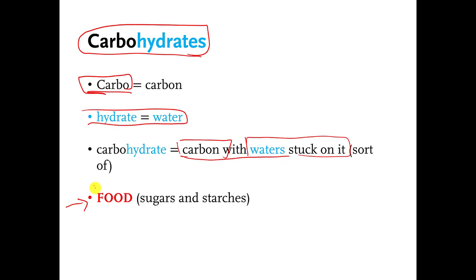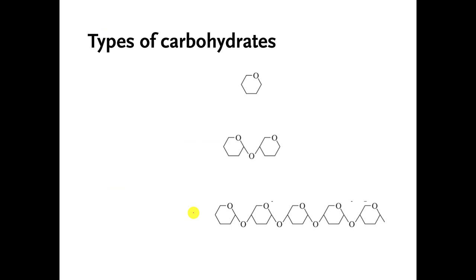When we think of carbohydrates, we usually think of food, like sugars and starches. These are examples of carbohydrate molecules. There are different kinds of carbohydrates. You can break them into many categories. I'm going to break them into three categories.